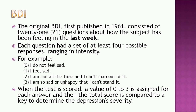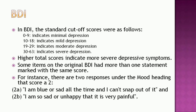When the test is scored, a value of 0 to 3 is assigned for each answer and then the total score is compared to determine the depression severity. In BDI, the standard cutoff scores are as follows: 0 to 9 indicates minimal depression, 10 to 18 indicates mild depression, 19 to 29 indicates moderate depression, and 30 to 63 indicates severe depression.